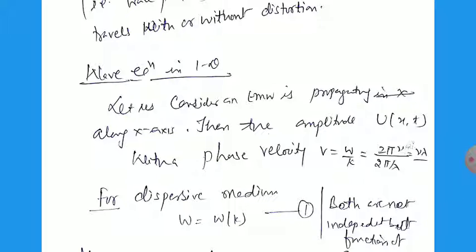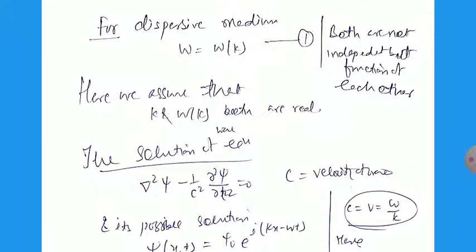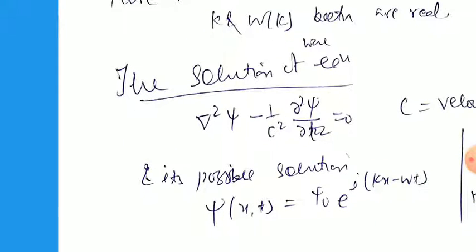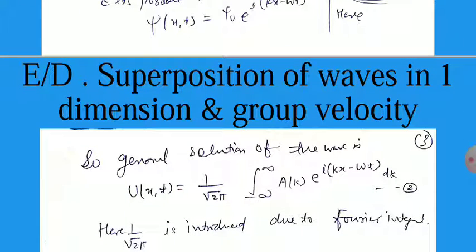For a dispersive medium, we know that omega depends on k, where k is the wave number or wave propagation constant. So both are not independent of each other. Here we assume that k and omega are both real. The solution of the wave equation — del squared psi minus (1/c squared) del squared psi by dt squared equals zero, where c is the velocity of the wave in the medium or the velocity of light in vacuum — is psi(x,t) equal to psi-zero times e to the power iota(kx minus omega t). The general solution is u(x,t) equal to (1 by root 2 pi) times the integral from minus infinity to plus infinity of a(k) times e to the power iota(kx minus omega t) dk.